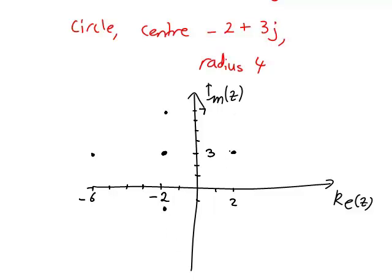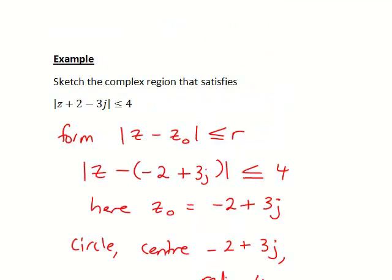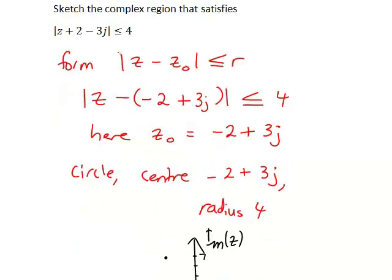These points help with drawing the region. Before we draw the circle through those points, will the boundary be included? Yes, because we have |z - z₀| ≤ 4, the boundary is included. So we draw it with a solid line, not dashed.